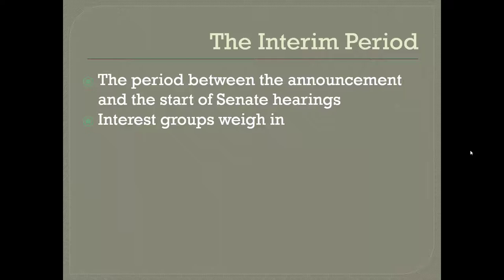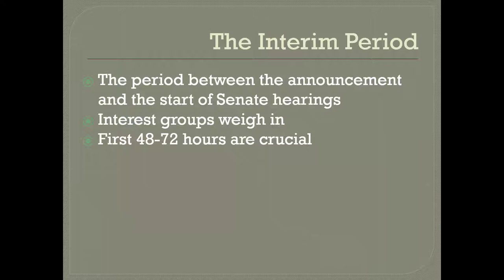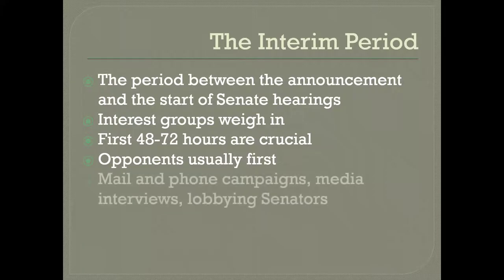Interest groups begin intensive investigations similar to those conducted by the Department of Justice and the FBI. The first 48 to 72 hours are very crucial in this process — within the first day or two you can usually tell whether the nomination is going to sail through fairly easily, whether it's going to run into trouble, and what the main issues in opposition might be. So although the interim period usually lasts two to three months, the first two to three days are very telling about what's eventually going to happen.